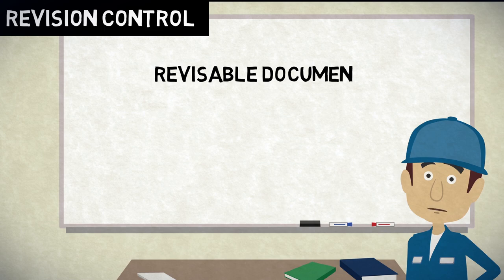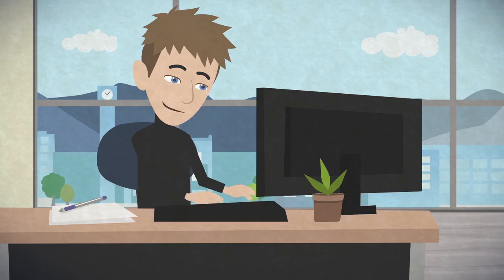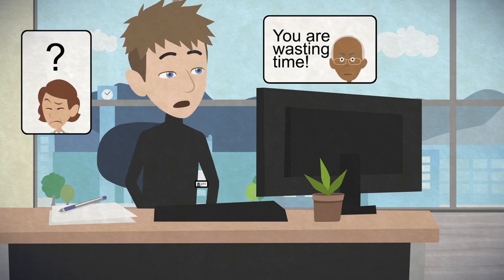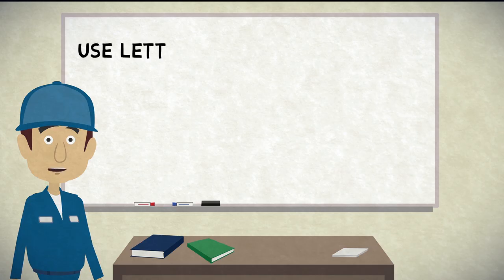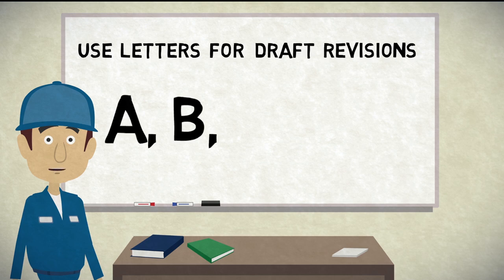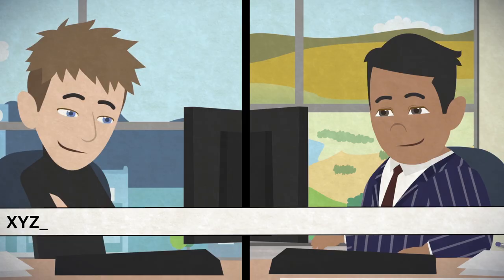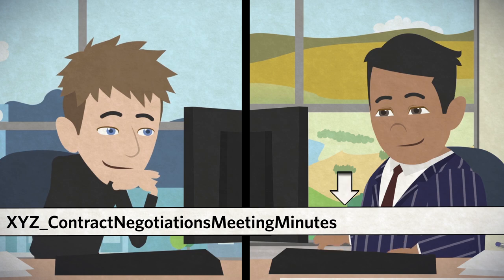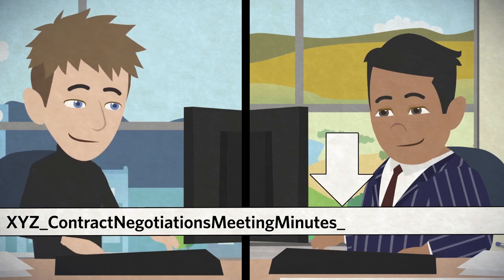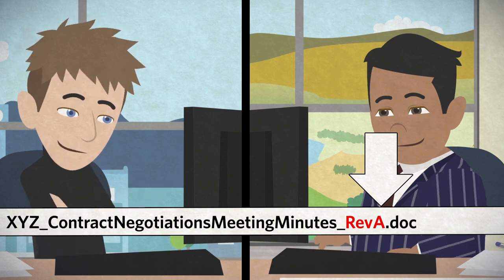For revisable documents such as presentations, reports, and meeting minutes, working on or sending out an earlier draft is embarrassing, confusing, and a waste of time. When a revisable document is being drafted, use letters A, B, C, etc. to indicate the document is in the drafting stage. Let's take our previous file name and add revision control. First, add an underscore to separate the elements, then add REV A. Now it is ready for review and discussion.